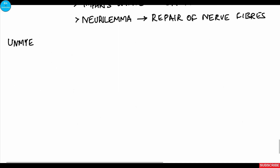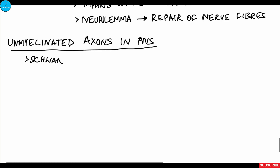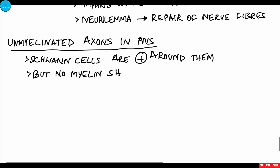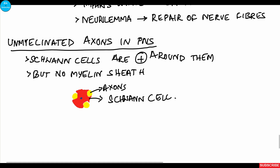Unmyelinated axons are also related to Schwann cells, but the relationship is different — there is no formation of multiple layers of cell membrane. One Schwann cell is related to many axons, and as seen in diagrams, no myelin sheath is formed around them. The Schwann cell, as a neuroglial cell, simply supports the axon. These are the features of histology of the peripheral nerve and the process of myelination.